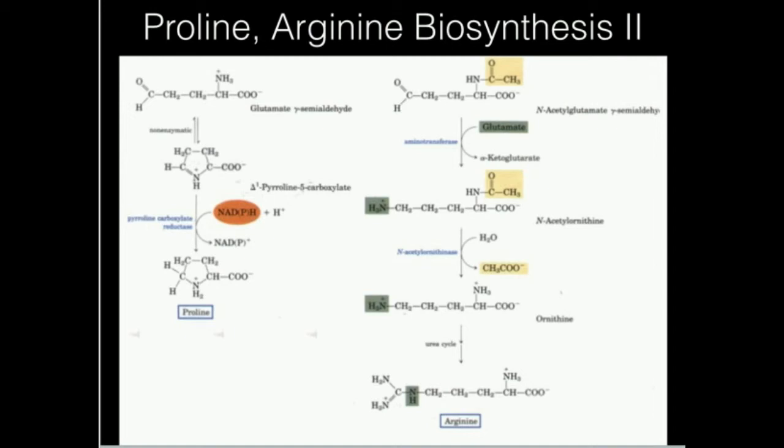In the other column where we have N-acetylglutamate gamma semialdehyde, we're going to transaminate it. We looked at transaminases before—we're going to take this carbonyl and replace it with an amine, giving N-acetyl ornithine. Now we're going to use an enzyme called N-acetyl ornithinase, which hydrolyzes off this acetyl group to give acetate. That takes us from N-acetyl ornithine to ornithine.